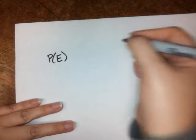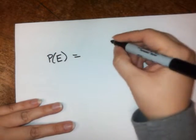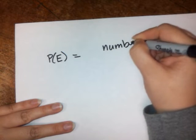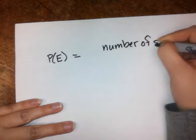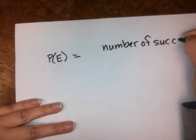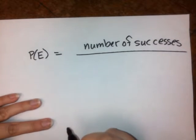P of E, that equals the number of successes. S-U-C-C-E-S-S-E-S. Spelling not my strong suit, but I think I got that one.